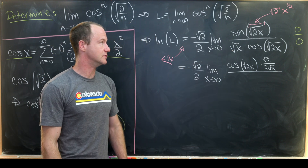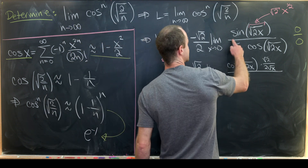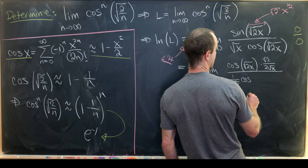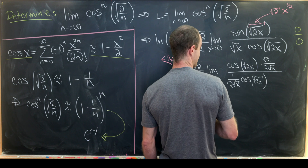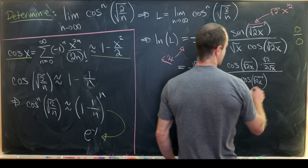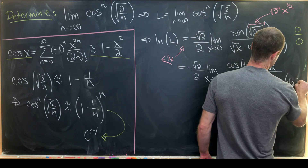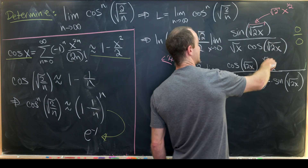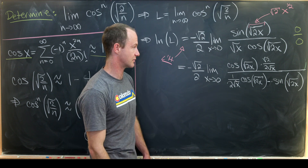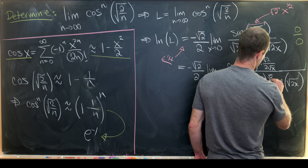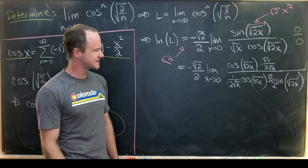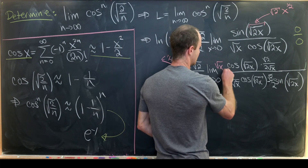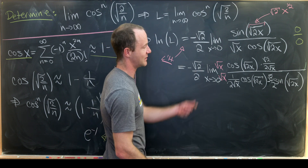In the denominator we use the product rule together with the chain rule. The derivative of the square root of x is 1 over 2 times the square root of x, multiplied by cosine of the square root of 2x. Then the second term is minus sine of the square root of 2x times the same constant, root 2 over 2. Factoring out another root 2 over 2 and multiplying numerator and denominator by the square root of x to clear the fractional expressions gives a combined constant of minus one-half out front.